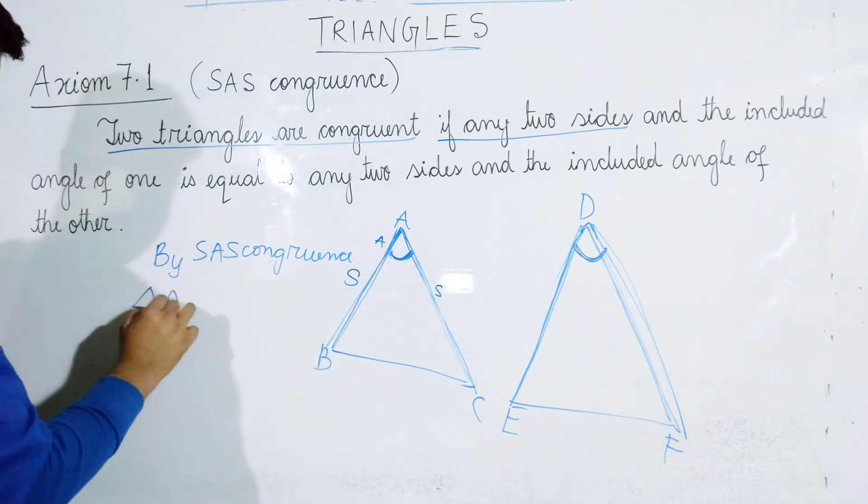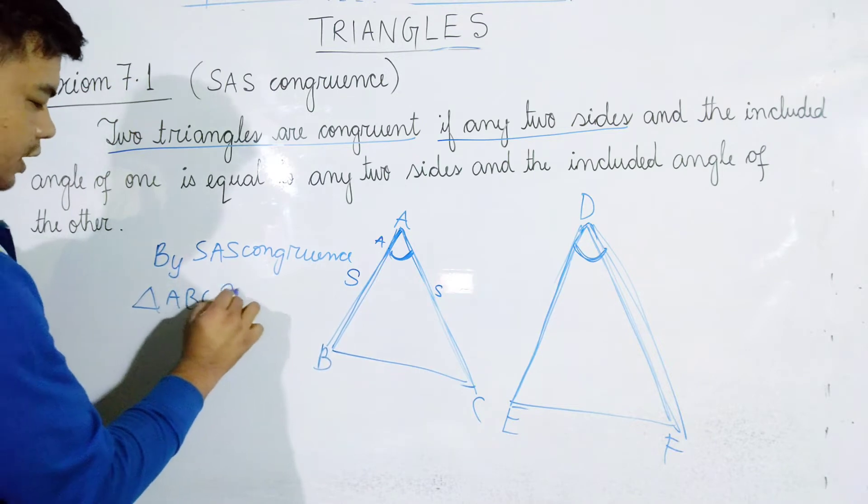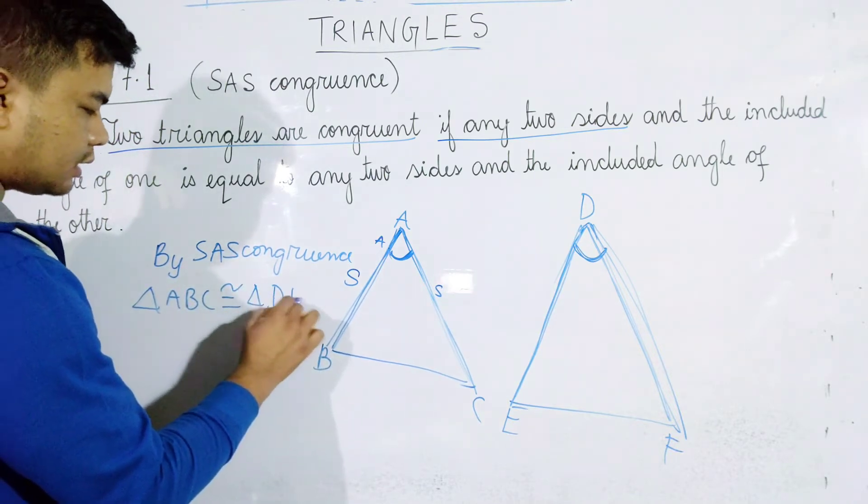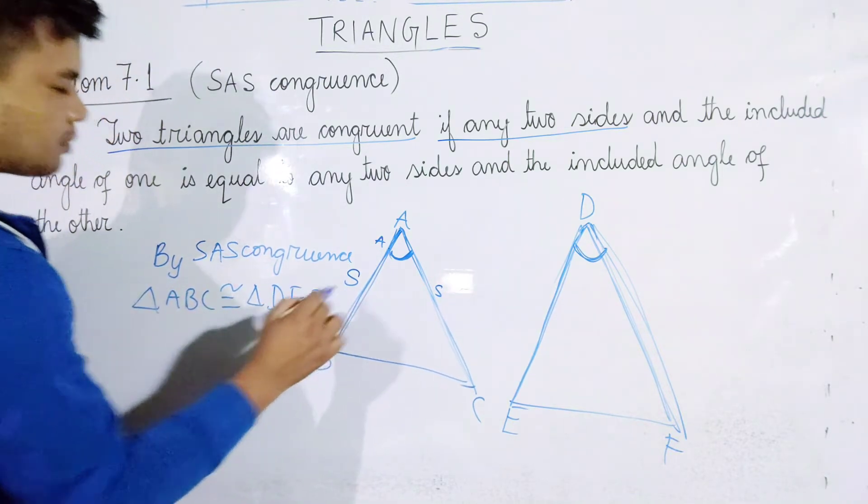Therefore, triangle ABC is congruent to triangle DEF by the SAS congruence criterion.